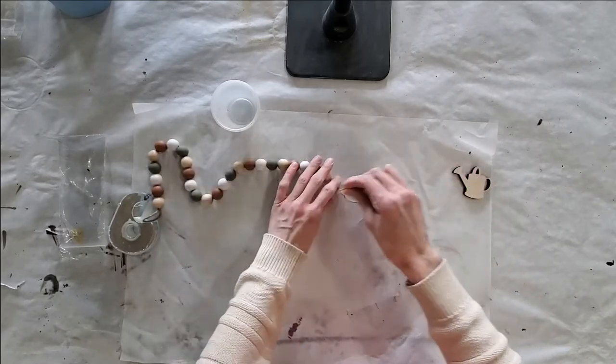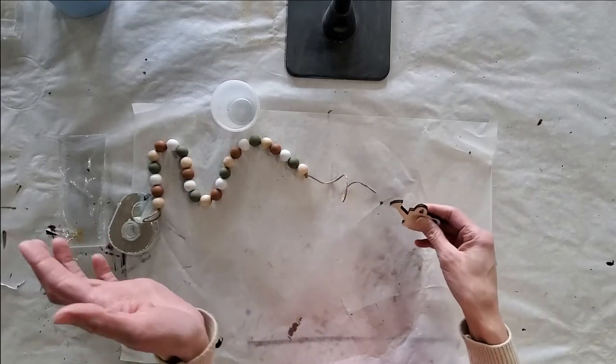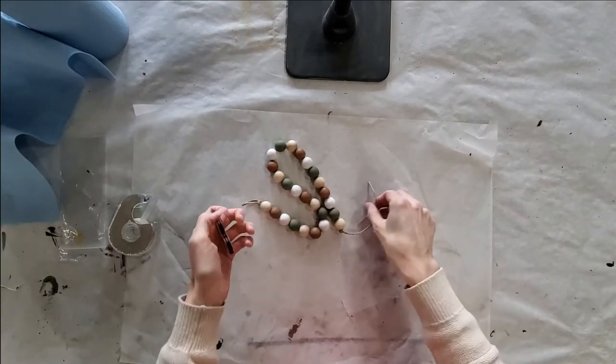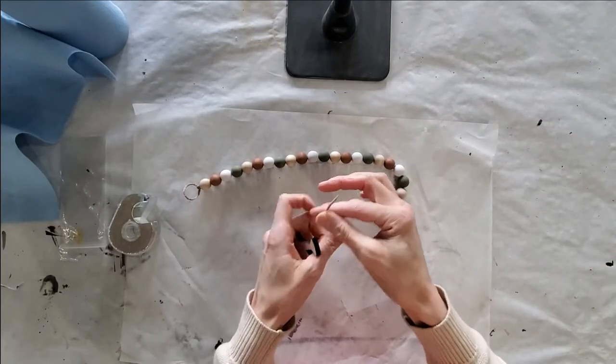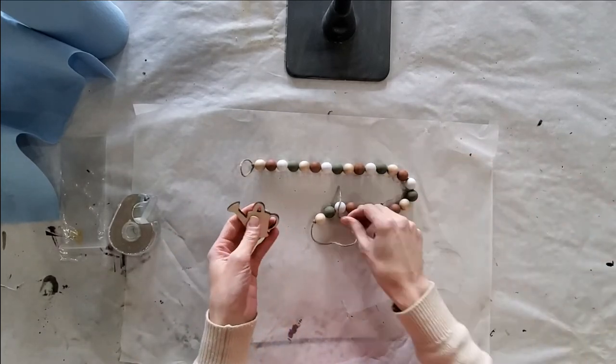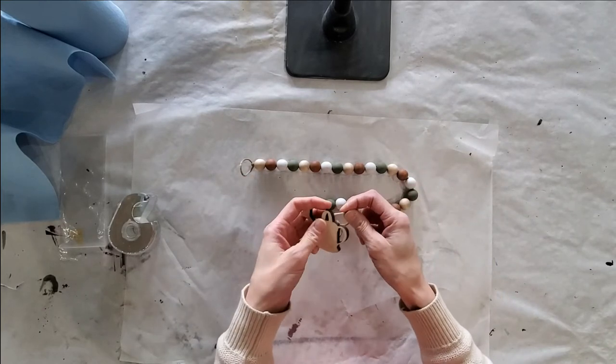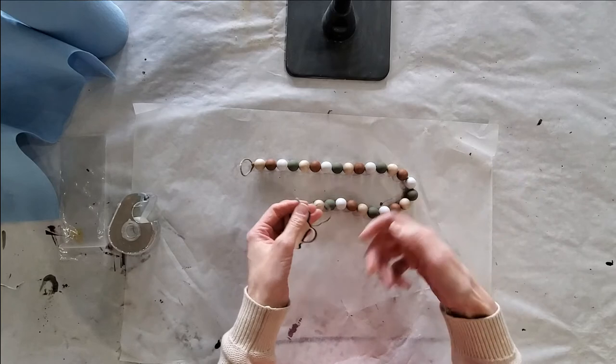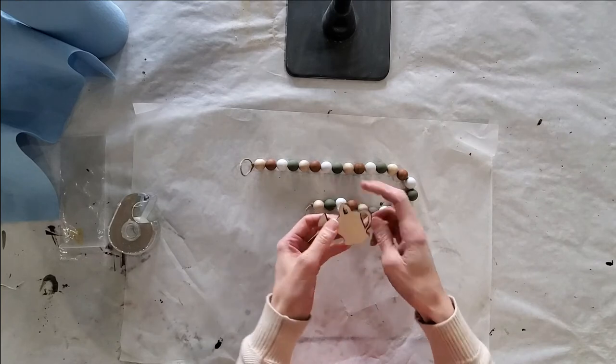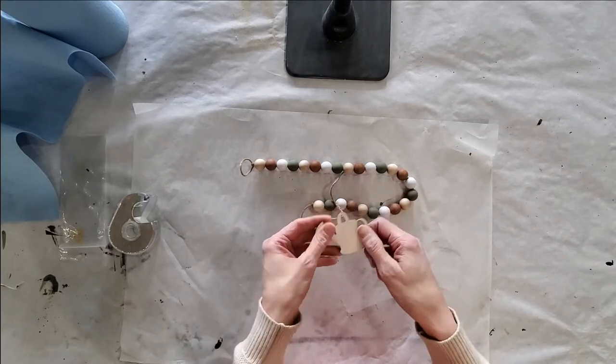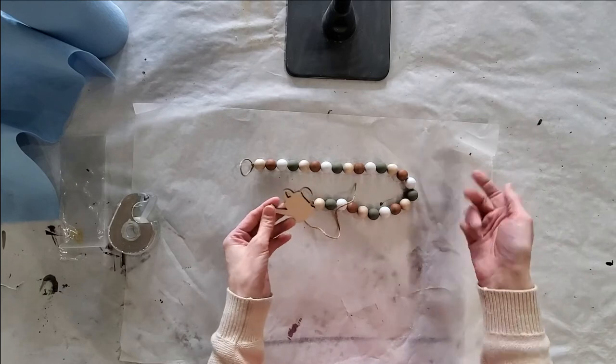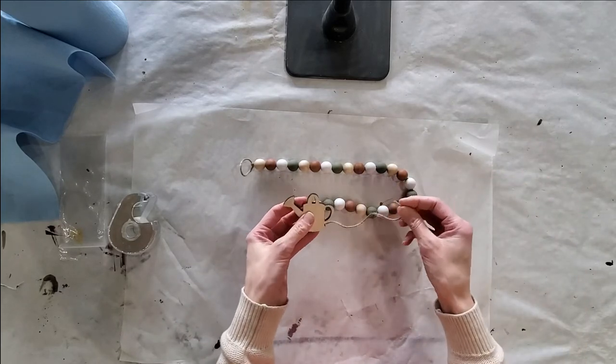Normally the next part we would do is attach a tassel, and you're more than welcome to make yourself a tassel and add it on. You can attach the little watering can with it at the same time. But we're just going to do the watering can. I left mine in a natural state because I like it with the color of my beads, however you can paint it any colors you want or stain it. It's completely up to you.